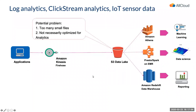The small file problem can happen with IoT sensor data because files are tiny and Kinesis Firehose is configured with a short buffer — like one or three minutes — so you end up with many small files before they reach a reasonable size.